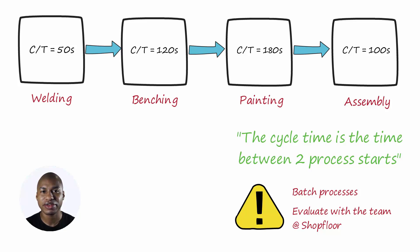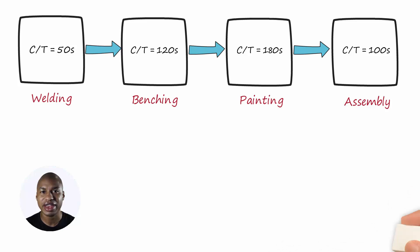Returning to the example of the line, through the takt time and the takt time bar chart tool, you can easily identify if there are bottlenecks and what is the process that regulates the speed of the line.